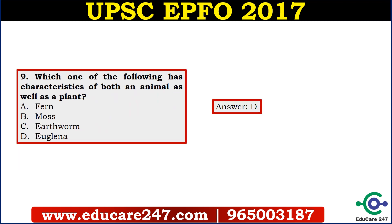The next question is: which one of the following has the characteristics of both an animal as well as a plant? Here the answer is Euglena. You must remember these kinds of factual questions and the groups of these organisms, as they can be asked in the next examination as well.